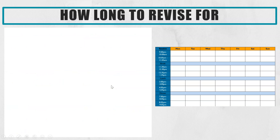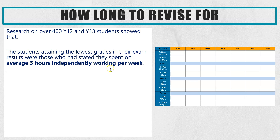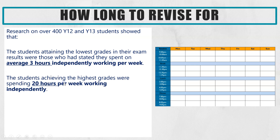Let's look at how long you should be revising for each day. Here is some research on over 400 Year 12 and Year 13 students, looking at what their final grade was compared to how many hours they worked outside of lessons per week. The students who attained the lowest grades stated that they spent on average three hours independently working per week across all of their subjects — that means homework, consolidation, and revision. The students scoring the highest grades, A's and A*s, were doing 20 hours per week on top of their lessons.